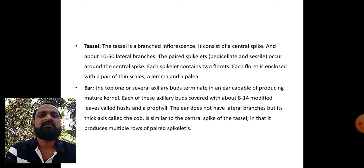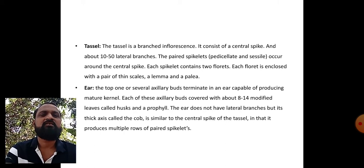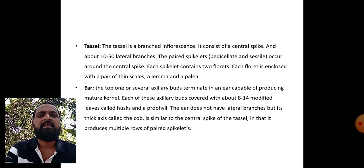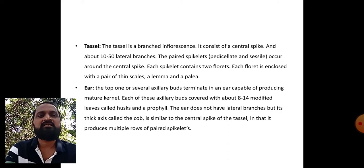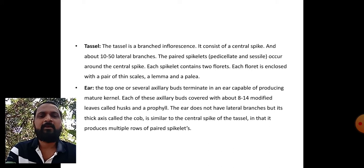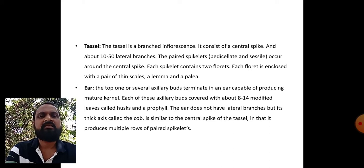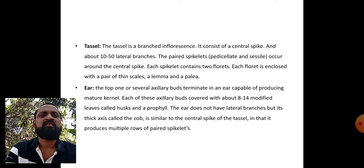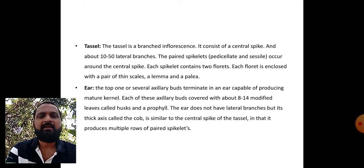Tassels: the tassel is a branched inflorescence consisting of a central spike and about 10 to 15 lateral branches. The paired spikelets - pedicellate and sessile - occur around the central spike. Each spikelet contains two florets, and each floret is enclosed with a pair of thin scales: lemma and palea.